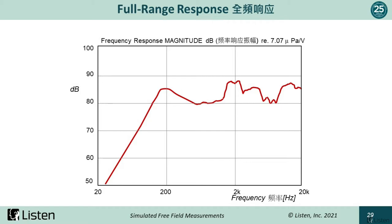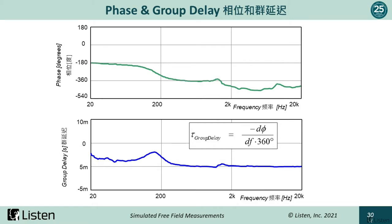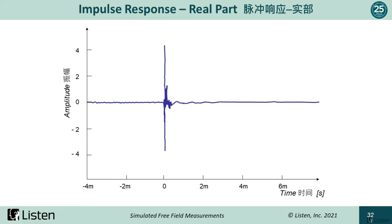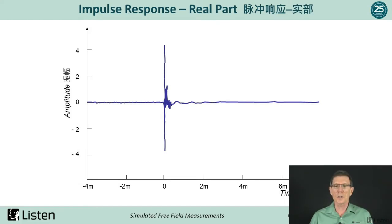What we get is a full-range response. In this example, it's for a two-way, five-inch, closed-box loudspeaker, and we see the final magnitude in dB SPL for one watt at one meter. We also get our corresponding phase and group delay responses. And last but not least, we get the full-bandwidth impulse response, both in magnitude — otherwise known as the energy time curve — and as the real and imaginary impulse response. This can be used in Listen's SoundMap for time-frequency analysis such as waterfall plots, or exported to MATLAB for further analysis.